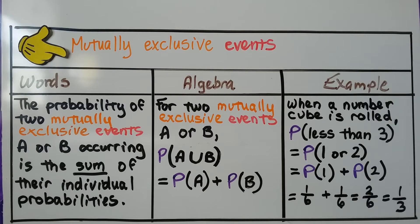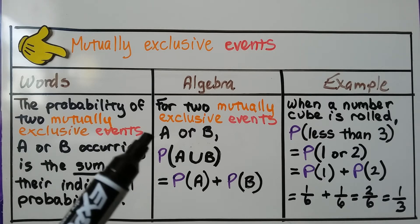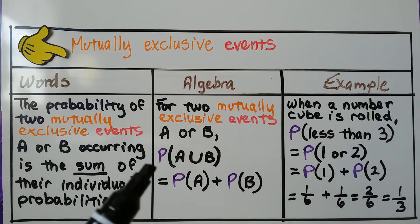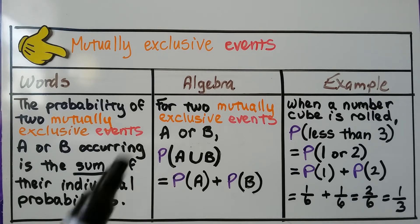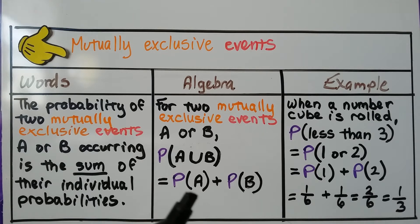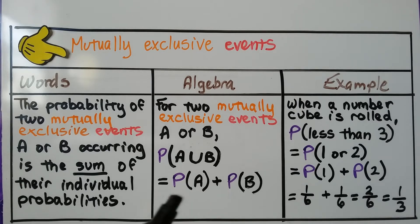For your notes on mutually exclusive events: the probability of two mutually exclusive events A or B occurring is the sum of their individual probabilities. In algebra, for two mutually exclusive events A or B, the probability of A or B is equal to the probability of A plus the probability of B — the sum.